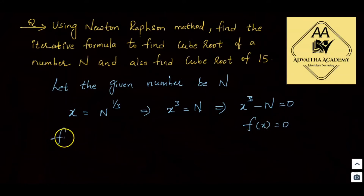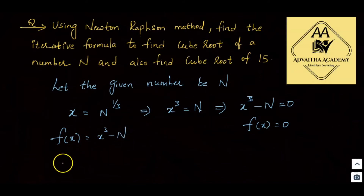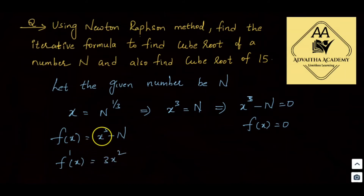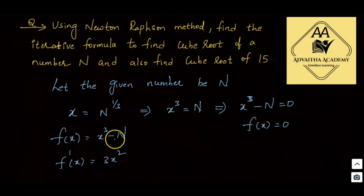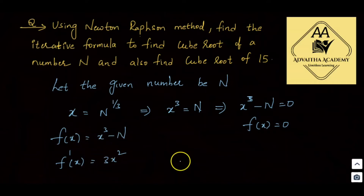So f of x is equal to x cubed minus n. The derivative, f dash of x, is equal to 3x squared. So we have f of x and f dash of x ready for substitution into the Newton-Raphson general formula.